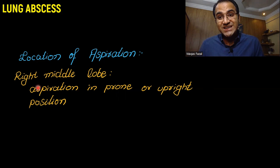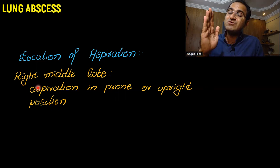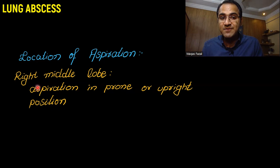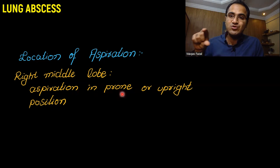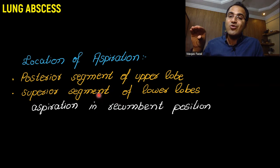If the patient is paralyzed, in a coma, has had a stroke, or has a weak gag reflex, there are chances they will develop aspiration. Depending on the position of the patient, different lung lobes are affected. Aspiration typically involves the right side more than the left. If the patient is in a prone or upright position, the right middle lobe is most commonly affected. If the patient is in the recumbent position, the posterior segment of the upper lobe or superior segment of the lower lobe is most commonly affected.